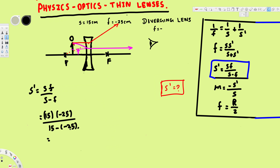The numerator gives us 15 times negative 25, which equals negative 375. The denominator is 15 minus negative 25, which becomes 15 plus 25, equal to 40. Dividing gives us negative 9.375 centimeters. The negative sign tells us this is a virtual image, which makes sense because the image forms in front of the lens.